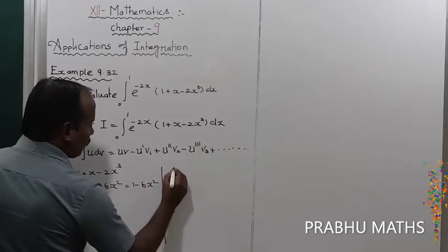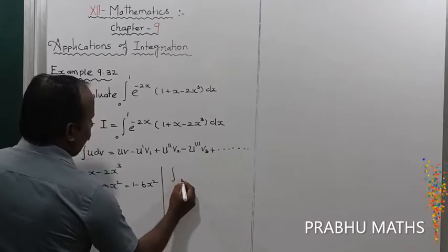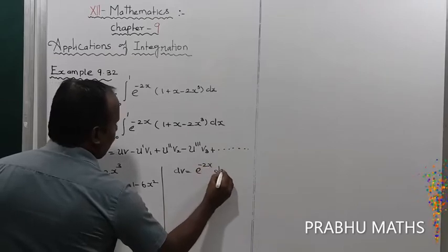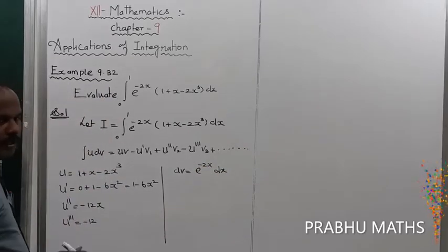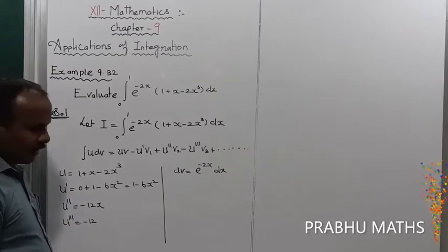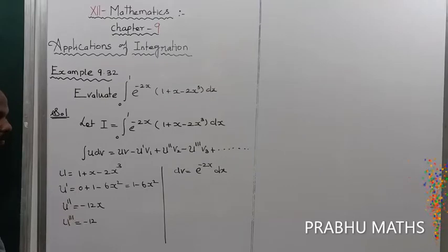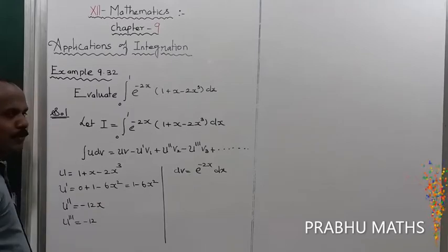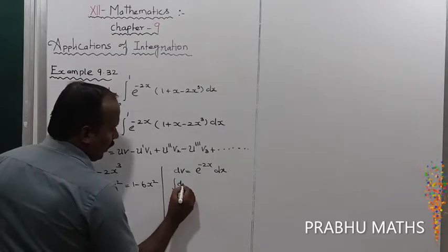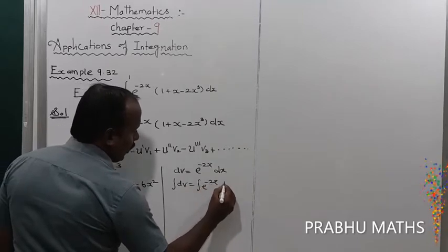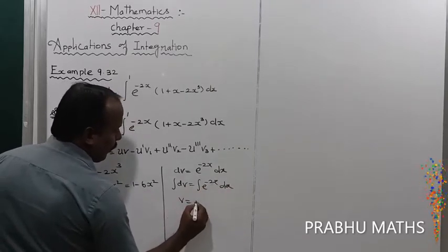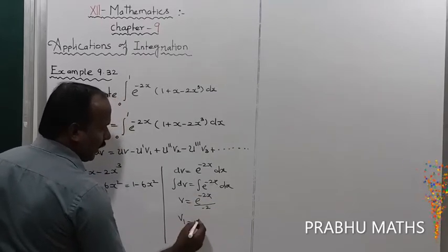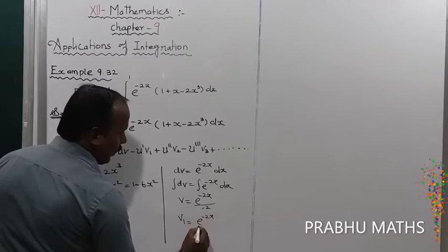Now dv = e^(-2x) dx. Integrating successively: v = e^(-2x) / (-2), and v₁ = e^(-2x) / (-1) — that is the second integration of e^(-2x).